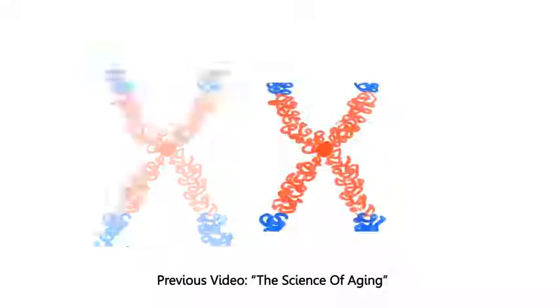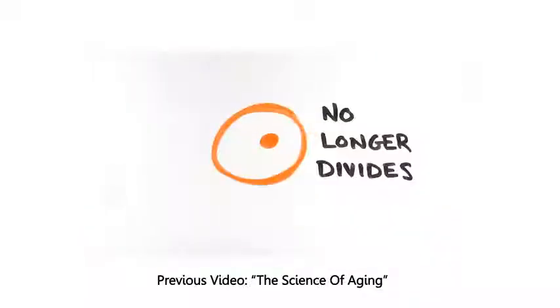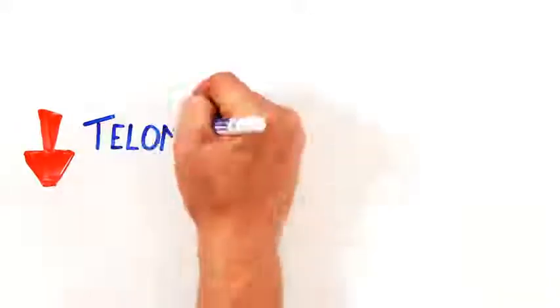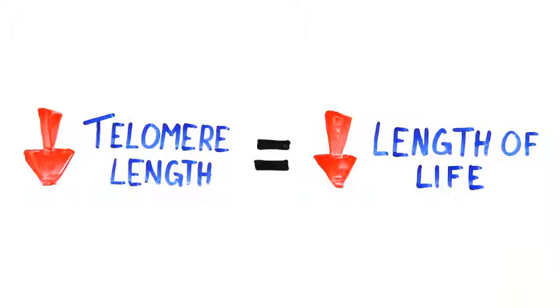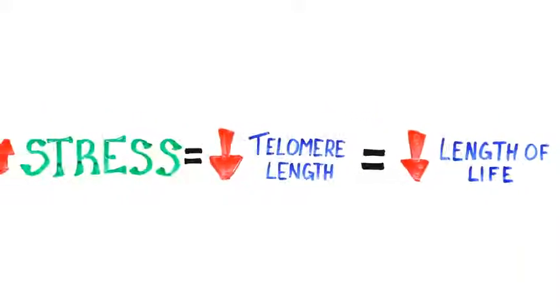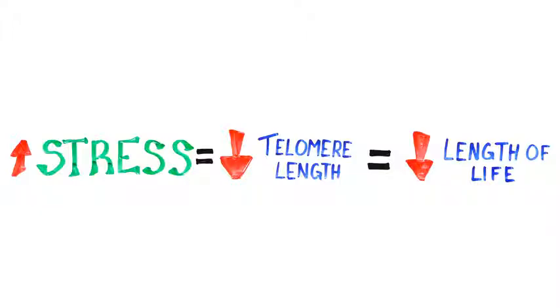Eventually the telomeres run out, at which point the cell stops duplicating and dies. So telomeres are directly related to aging and length of life. And it turns out stress may actually accelerate the shortening of these telomeres.